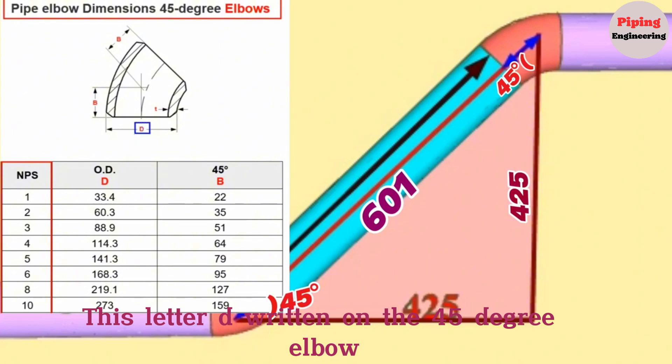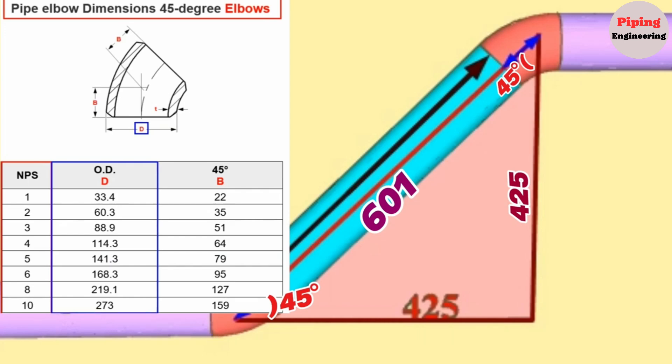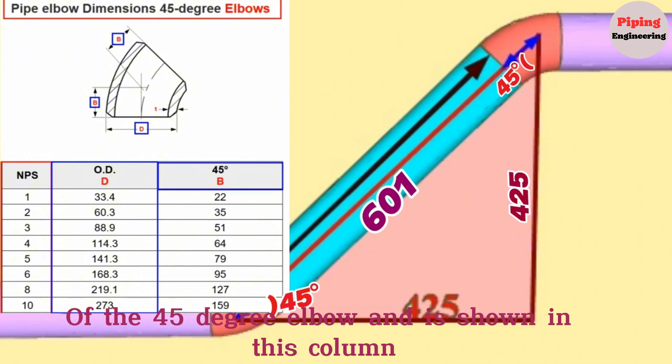This letter D written on the 45-degree elbow indicates the outside diameter of the elbow and is shown in this column. The letter B written on the 45-degree elbow indicates the length of the center to end dimension of the 45-degree elbow and is shown in this column.